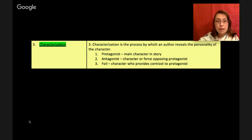Number three is characterization. Now characterization is the process by which an author reveals the personality of the character. There are three types of characters I want to focus you in on. The first is the protagonist and this is the main character of the story. The second is the antagonist and this is the character or force opposing the protagonist. So the antagonist is the one creating the problem. Go ahead write yourself a quick note next to number two that this one the antagonist is the one creating the problem.